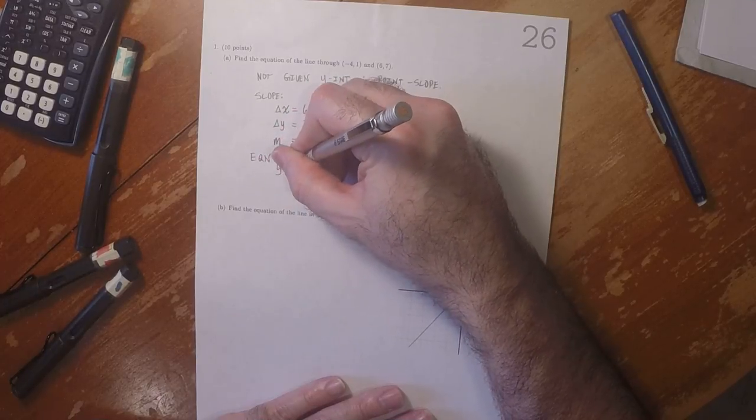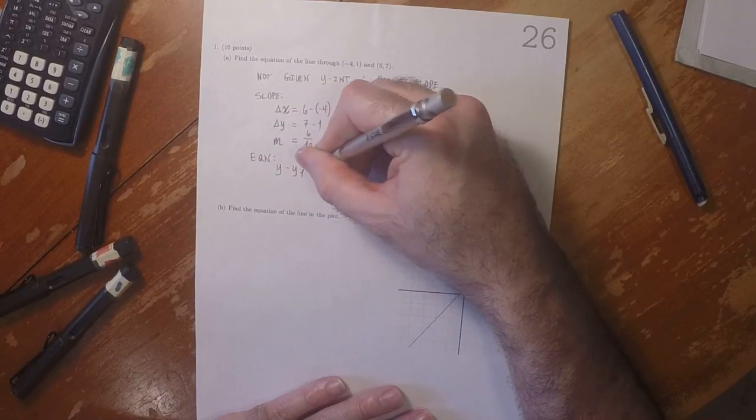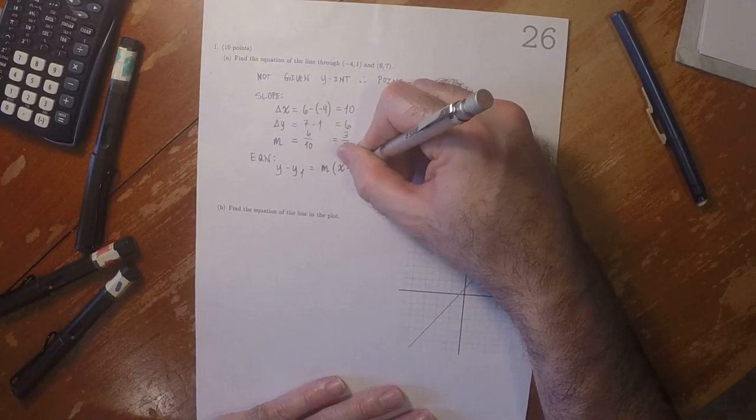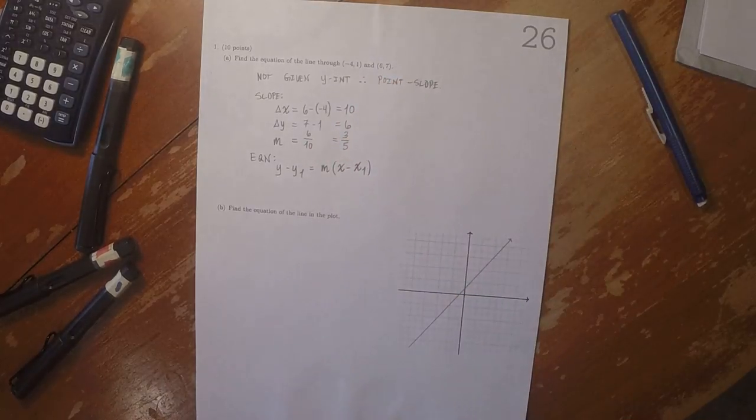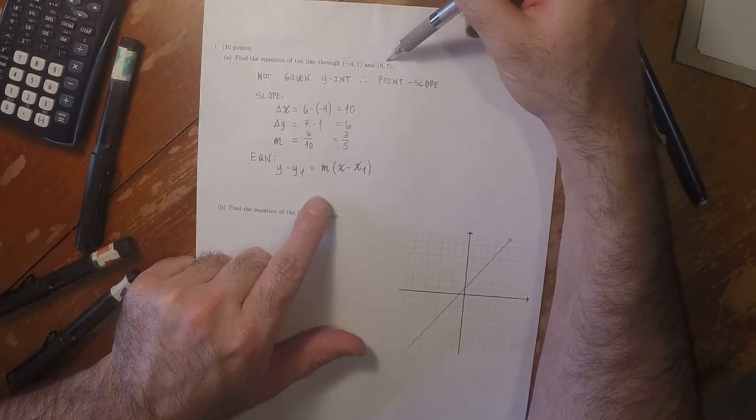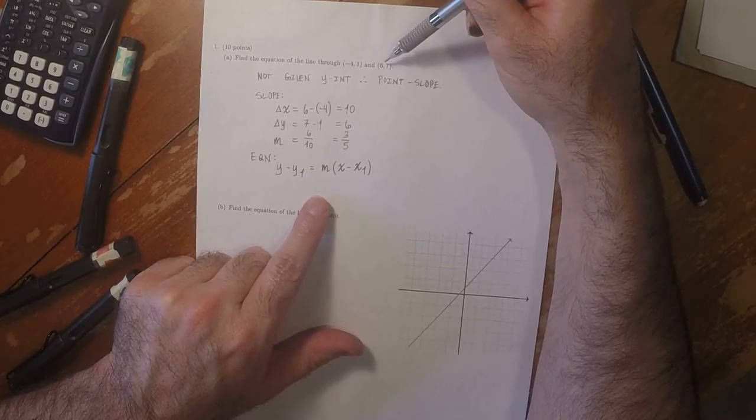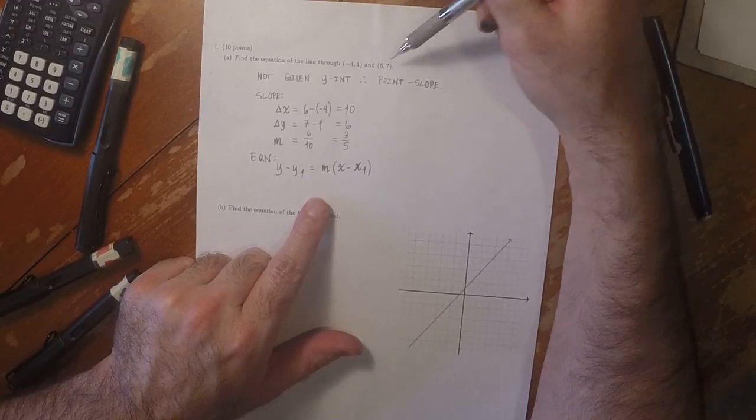that's y minus y1 equals m times x minus x1. We can use either point, so to make our lives simpler I'll use the point which has only positive values.